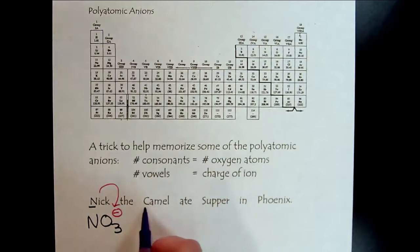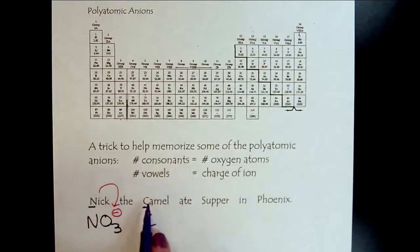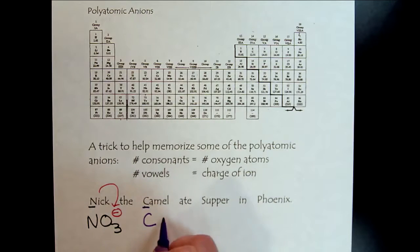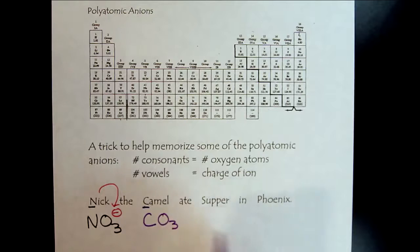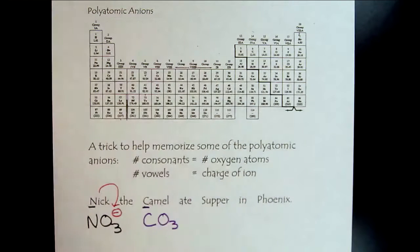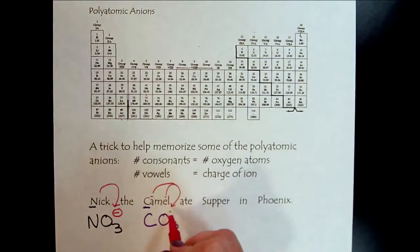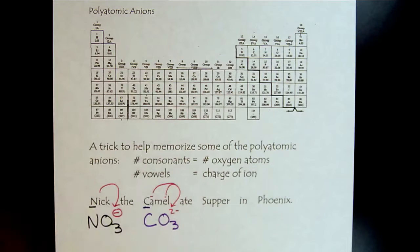Let's practice this a couple more times. So the C, that would be for carbonate. The number of consonants, one, two, three. There's three consonants. That means there's three oxygen atoms. The number of vowels. Now we have one, two vowels. So that's a minus two.